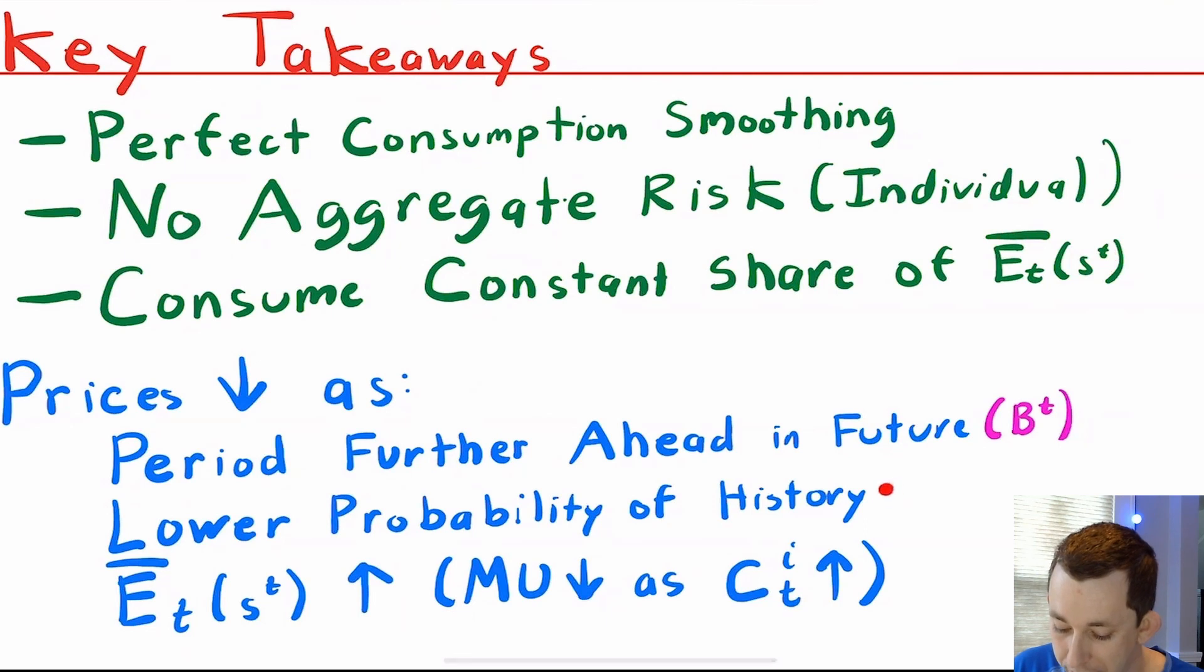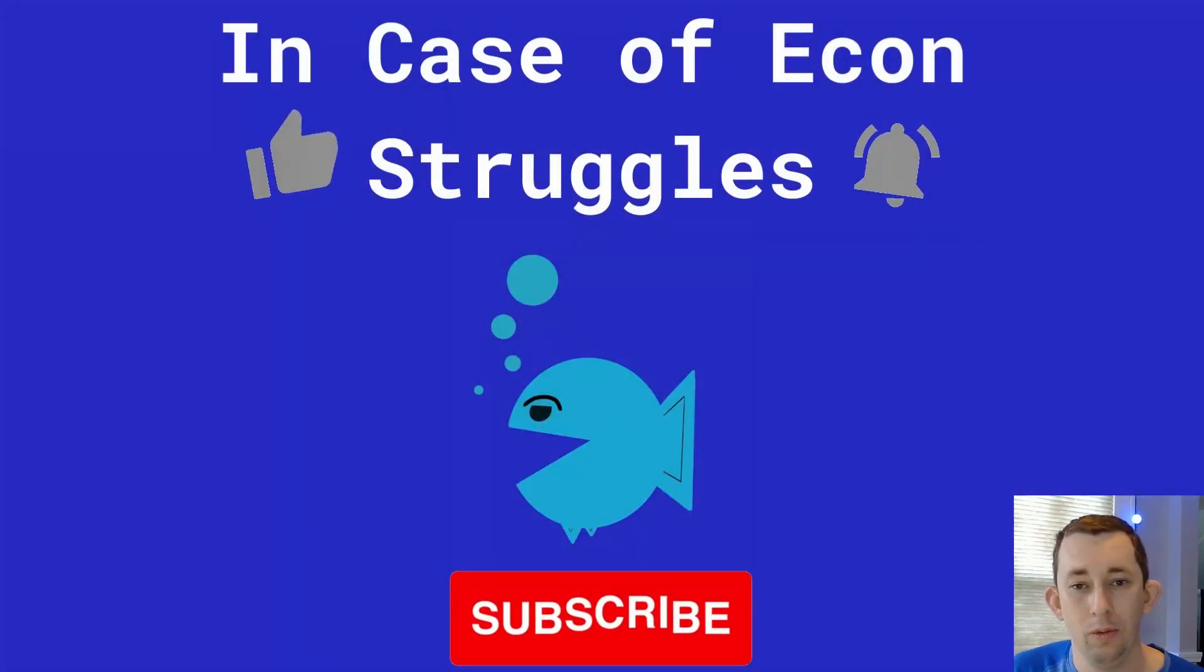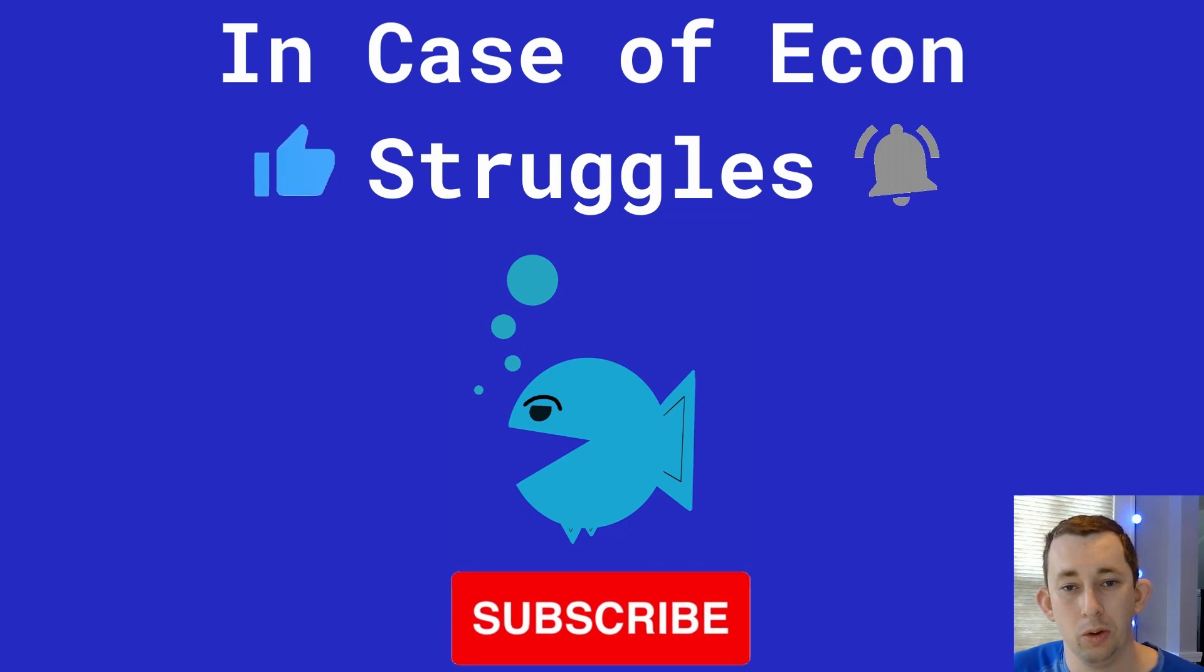Prices will go down if the period is further ahead in the future because our beta^t will discount the price even further. If the probability of an event history is lower, the price will be lower. And if aggregate endowment fluctuates, it goes up and down across periods or across event histories. Notice that as the aggregate endowment goes up, the marginal utility goes down because marginal utility is diminishing, which means that if we have a lot of aggregate endowment in a given period, in a given event history, the price for those coconuts in that period, in that event history should be lower than if we had a period in event history in which we had less coconuts or less endowment. So hopefully this makes a little more sense in terms of the first order conditions and characterizing the solution for an Arrow-Debreu equilibrium.